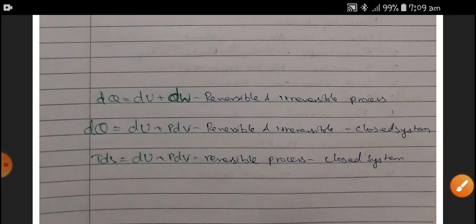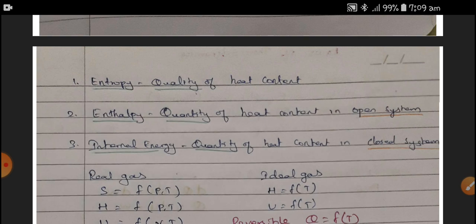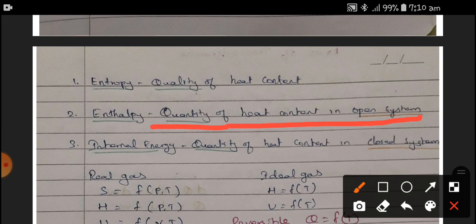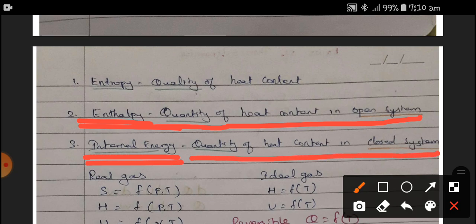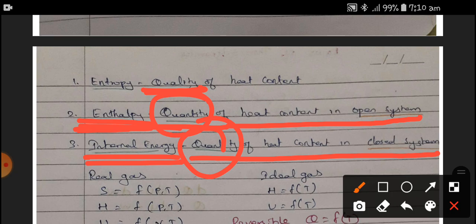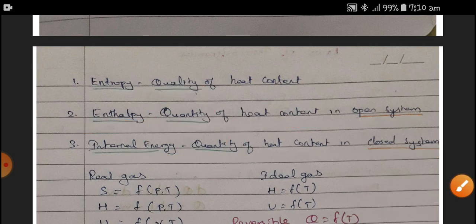Entropy is the quality of heat content, whereas enthalpy is the quantity of heat content. The quantity of heat content in an open system is called enthalpy, while the quantity of heat content in a closed system is called internal energy. To make it clear: entropy means quality; enthalpy and internal energy both mean quantity — enthalpy for open systems and internal energy for closed systems.